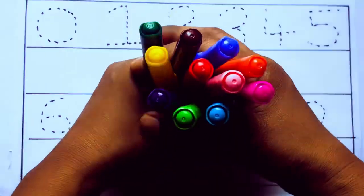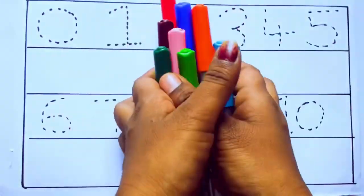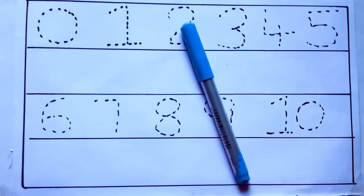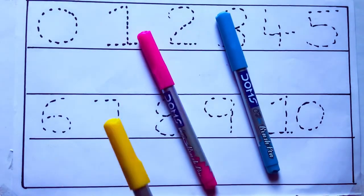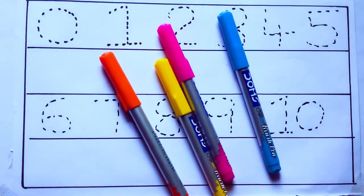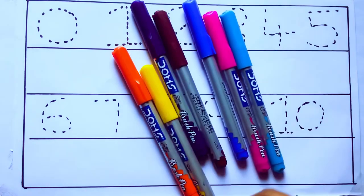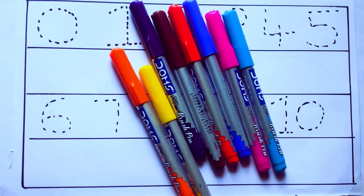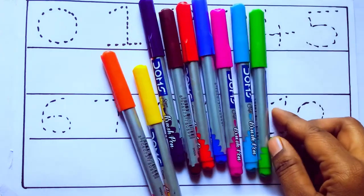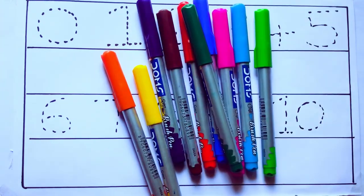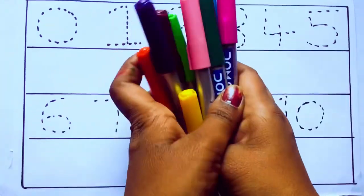Let's learn some colors. These are all the color pencils. Let's learn the names. Sky blue color, pink color, yellow color, orange color, violet color, blue color, brown color, red color, green color, and pink color.